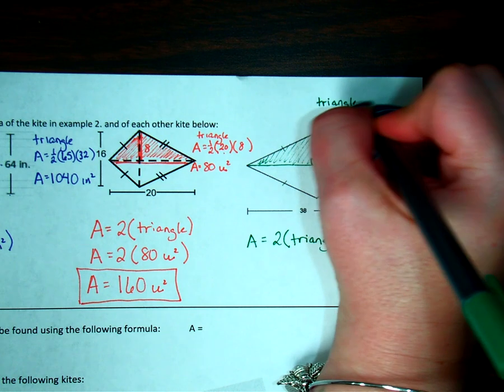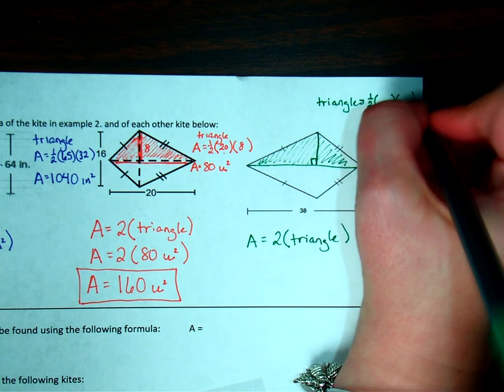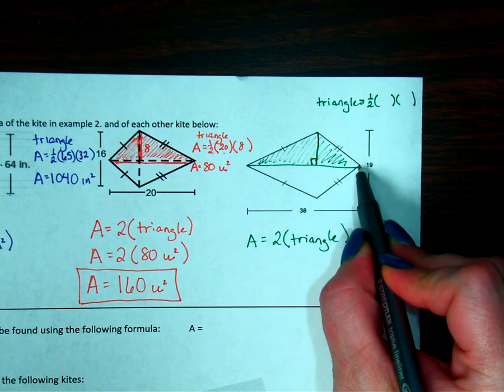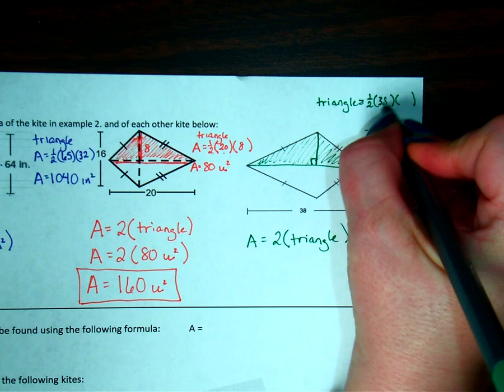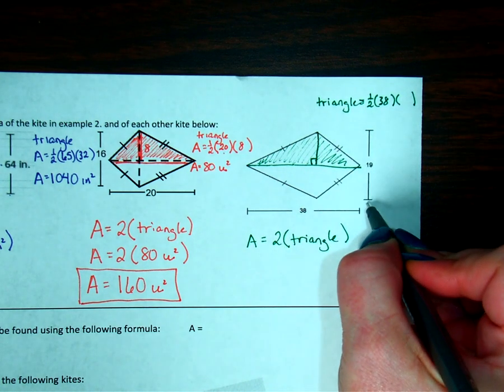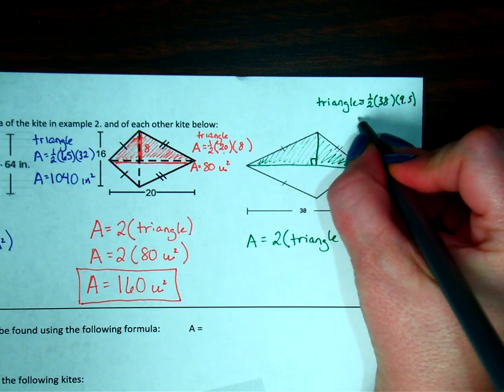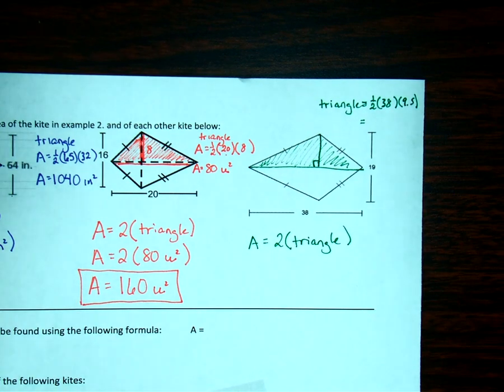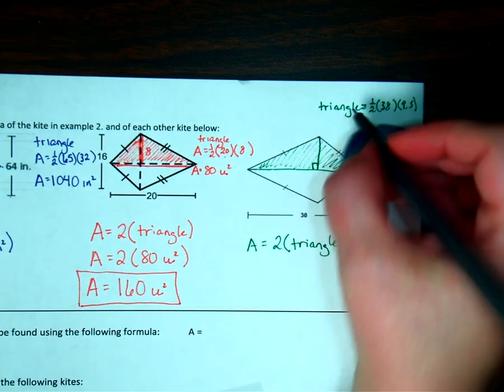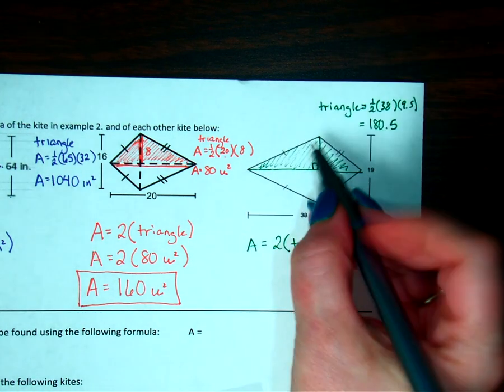So the triangle equals 1 half its base times its height. So that's going to be the base is my top to tail diagonal, which is 38. And the height is half of the side to side diagonal, so half of 19 is going to be 9.5. It's okay to have decimals. So 1 half times 38 times 9.5 is 180.5. I'm going to do that one more time just to make sure I didn't get any buttons pushed wrong. 1 half of 38 times 9.5. 180.5 is the area for the top triangle.